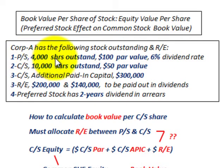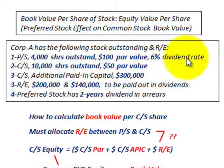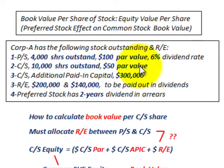For preferred stock, there are 4,000 shares outstanding at a $100 par value, and there's going to be a 6% dividend rate on the preferred stock. Common stock has 10,000 shares outstanding at a $50 par value. And then the common stock's additional paid-in capital is $300,000.